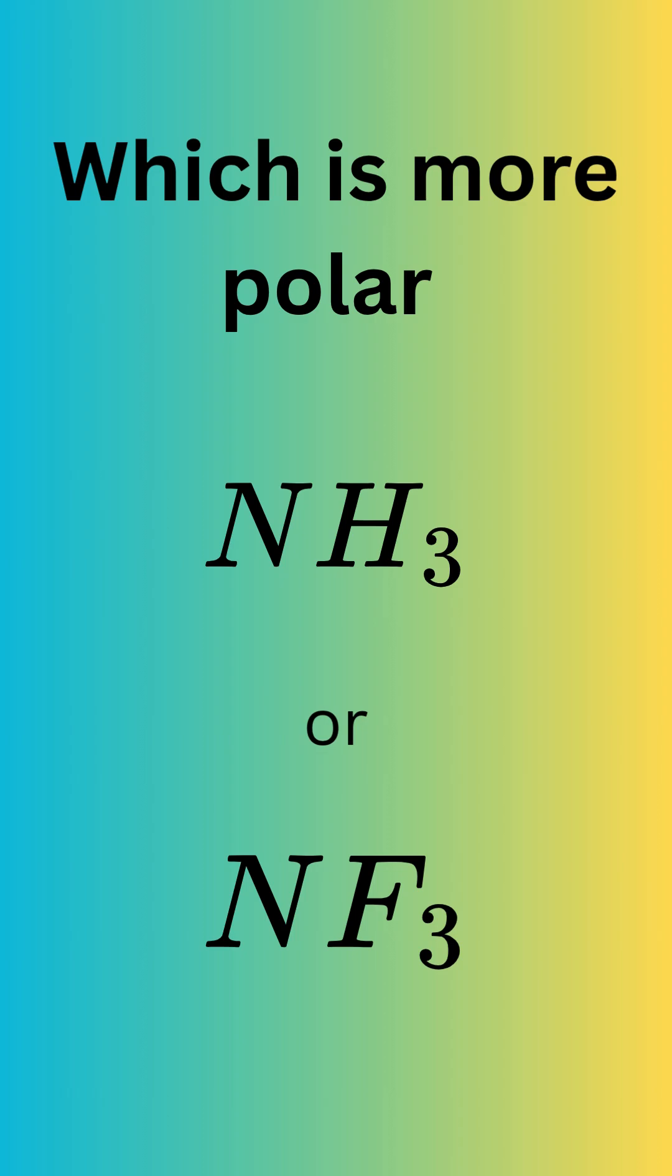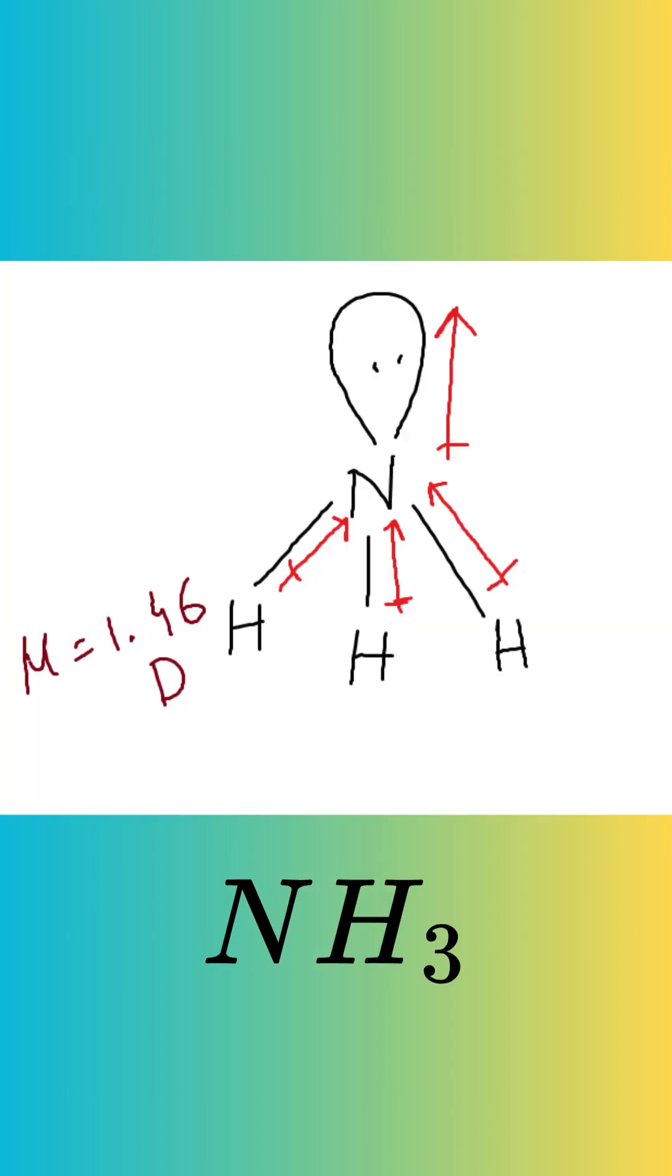The key difference lies in the direction of the individual bond dipoles and the lone pair dipole moment. In NH3, nitrogen is more electronegative than hydrogen, therefore the bond dipoles for the NH bonds point towards the nitrogen atom. The lone pair on the nitrogen also creates a dipole moment pointing away from the nitrogen atom, effectively in the same general direction as the NH bond dipoles.